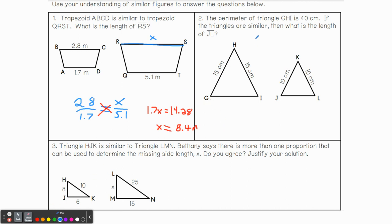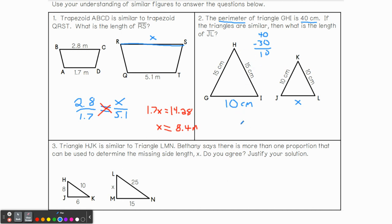Number two is a different setup. The perimeter of triangle GHI is 40 centimeters. If the triangles are similar, what is the length of JL? You might say we already know both side lengths — true, but we're looking for JL. Do we know that side? No, it's not given. But the perimeter is 40 centimeters, meaning the distance around the entire triangle is 40 centimeters. I already know two side lengths that add up to 30. So 40 minus 30 means this side length has to be 10 centimeters.